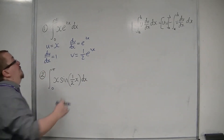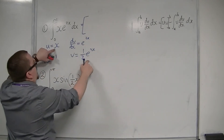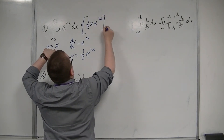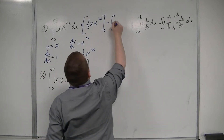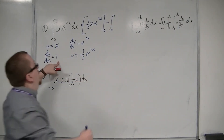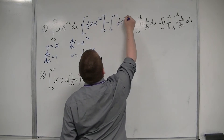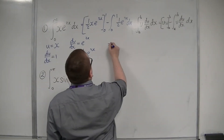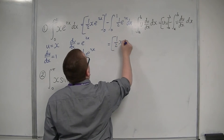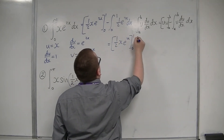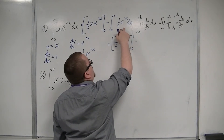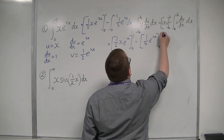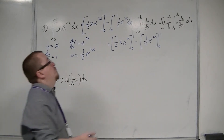So we can now use the formula. This is equal to u times v, so one half x e to the 2x, evaluated between 0 and 1, take away the integral between 0 and 1 of v du by dx — so one half e to the 2x dx. Integrating one half e to the 2x gives one quarter e to the 2x.